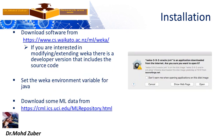Installation of Weka tool. Download the software from the link www.cs.waikato.ac.nz — this is the link where you can install Weka tool. If you are interested in modifying or extending Weka, there is a developer version that includes the source code. You can also set a Weka environment variable for Java.